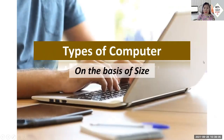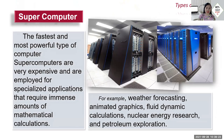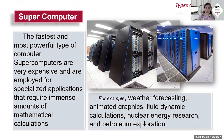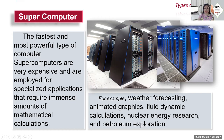Now let's look at the types of computers based on size. First is the supercomputer — the fastest and most powerful type of computer. They are very expensive and are used for specialized applications requiring immense mathematical calculations, such as weather forecasting, animated graphics, fluid dynamic calculations, nuclear energy research, and petroleum exploration.